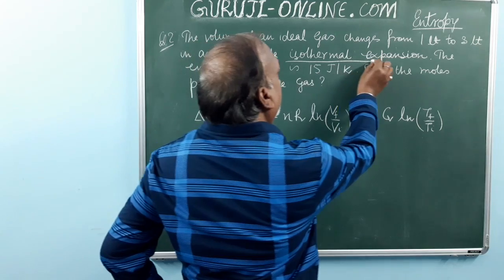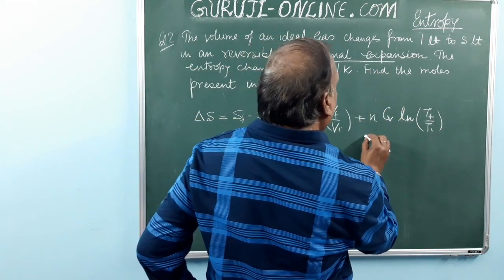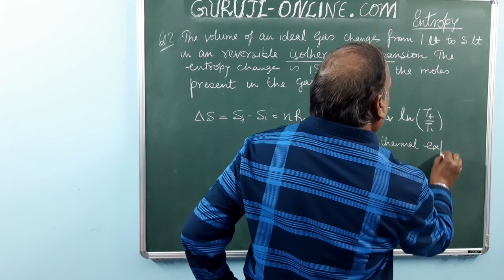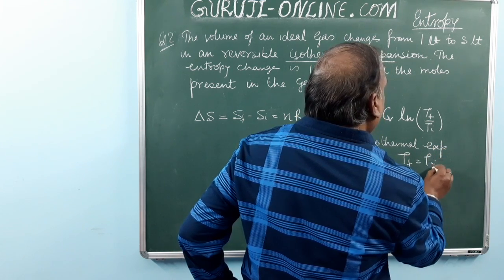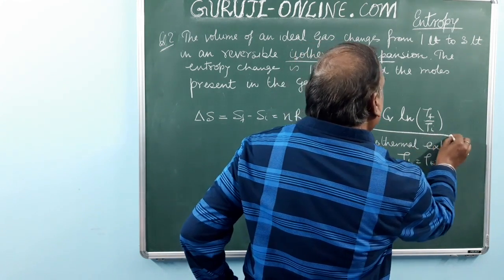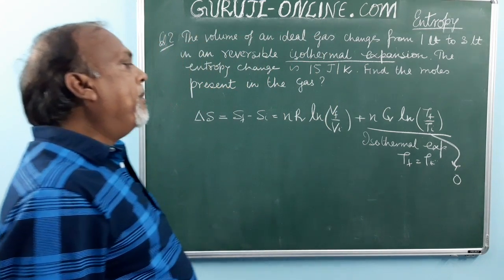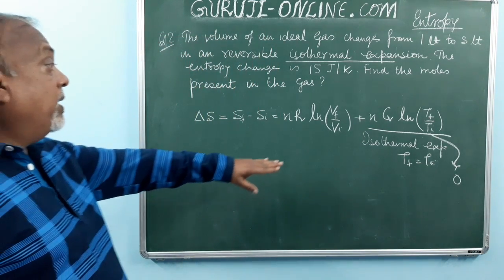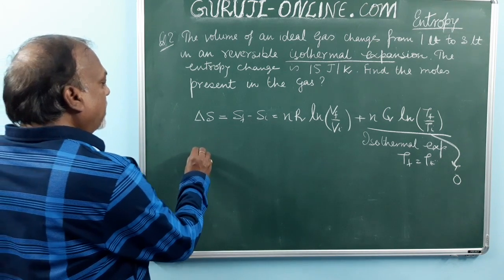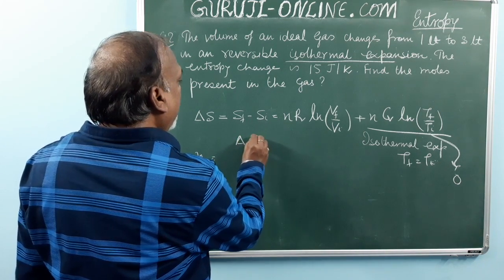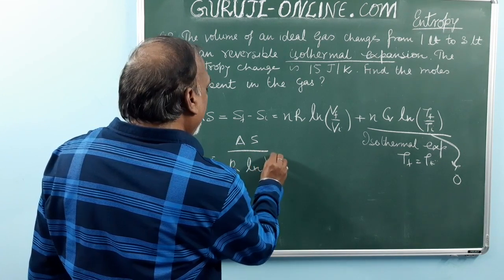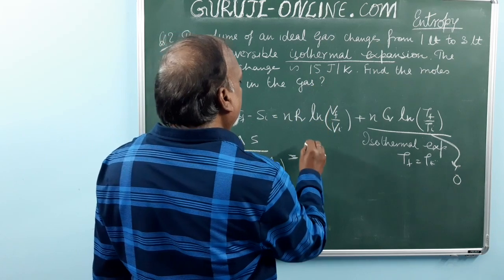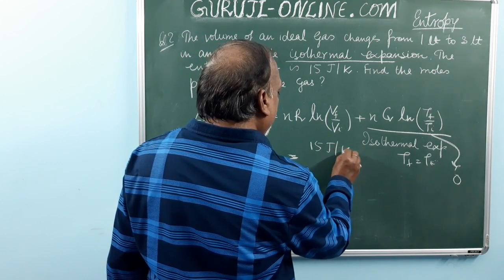For this isothermal expansion, Tf equals Ti, so the second term becomes zero since ln(1) = 0. Rearranging: N = delta S divided by R ln(Vf/Vi). Substituting: N = 15 joules per Kelvin divided by 8.31 joules per mole per Kelvin, multiplied by ln(3 litres divided by 1 litre).